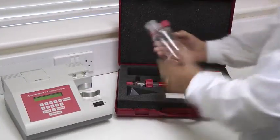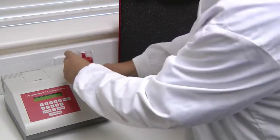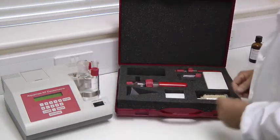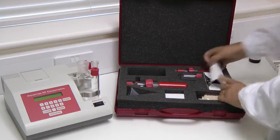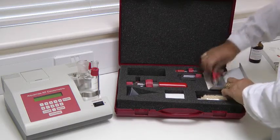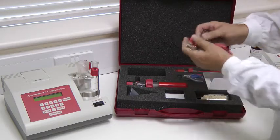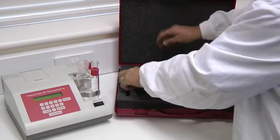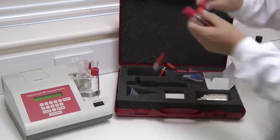To assemble the glassware, start by placing the titration vessel in the holder. Next take the electrode leads and attach them to the generator and detector electrodes and then locate the electrodes on the titration vessel.